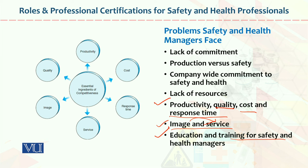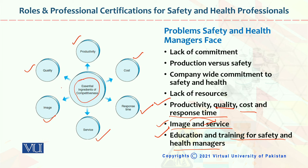Education and training for safety and health managers: Education means knowing something about everything. Training is the transformation of knowledge from one person to another so that he or she can perform duties in a better way. Education and training are two essential components for ensuring safety and health within any organization. Looking at the diagram, all the concepts shared — quality, productivity, cost, response time, service, and image — are all essential ingredients of competitiveness, meaning how you compete with your competitors. With this, the topic of roles and professional certification for safety and health professionals has been completed.